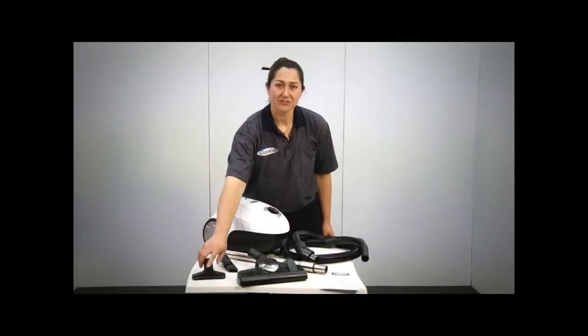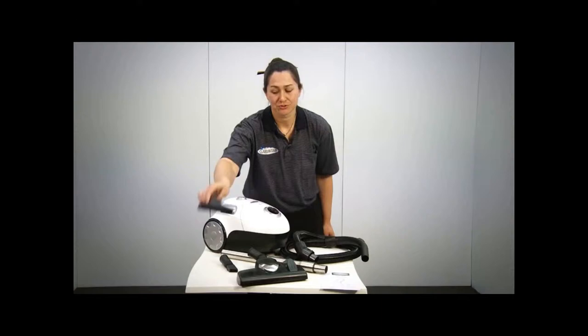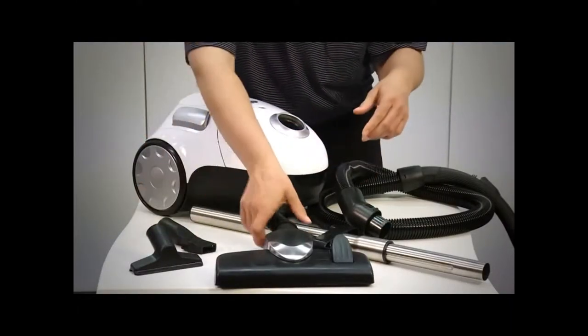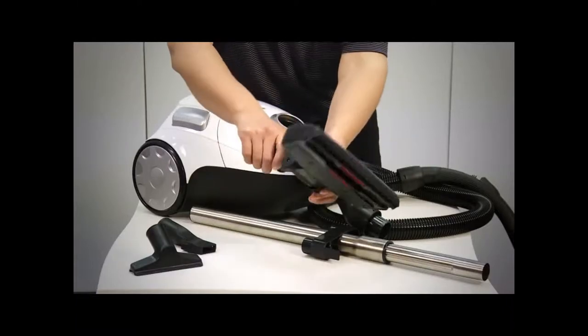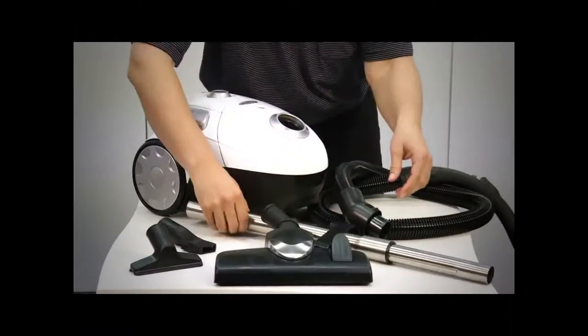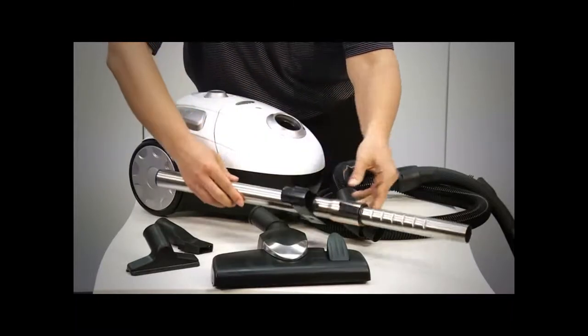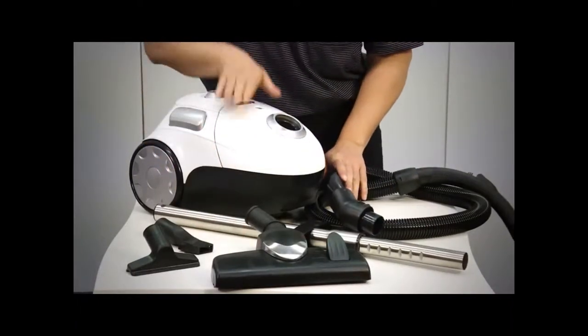Out of the box, some of the tools you get are an upholstery tool, crevice tool and dusting brush, the wheeled combination floor tool and telescopic rod. Of course you get the hose and the machine.